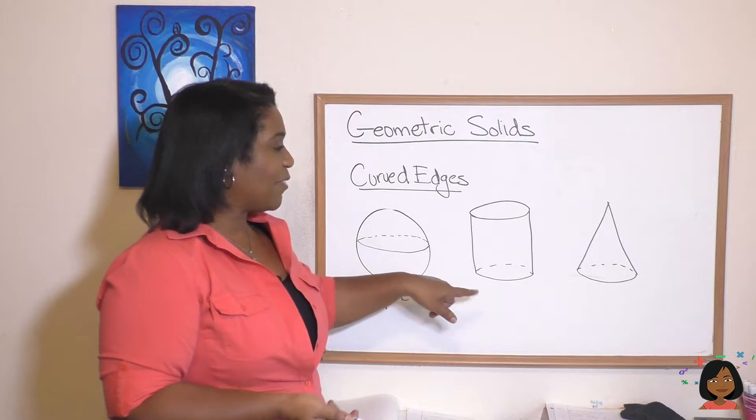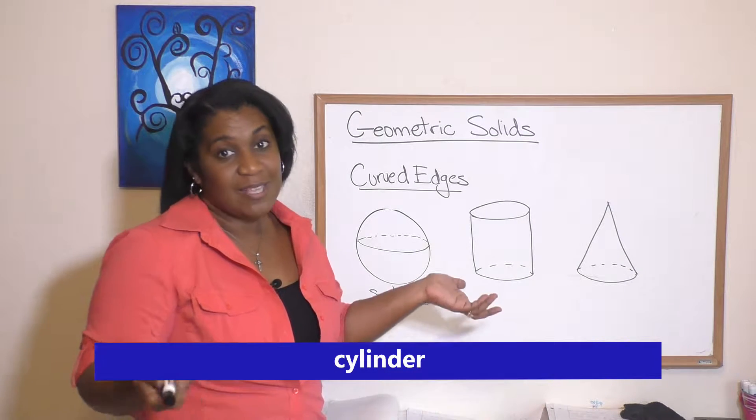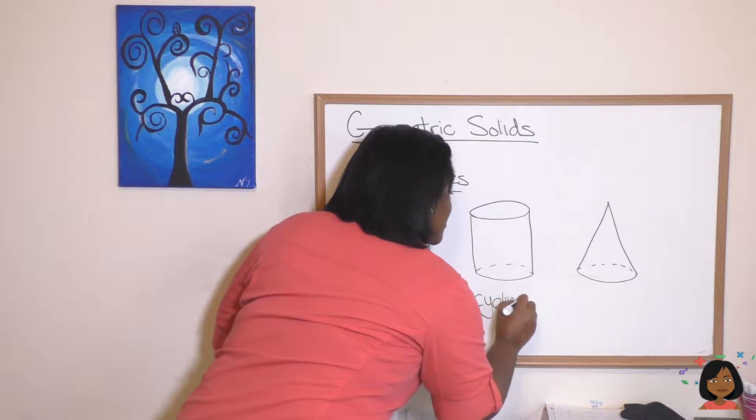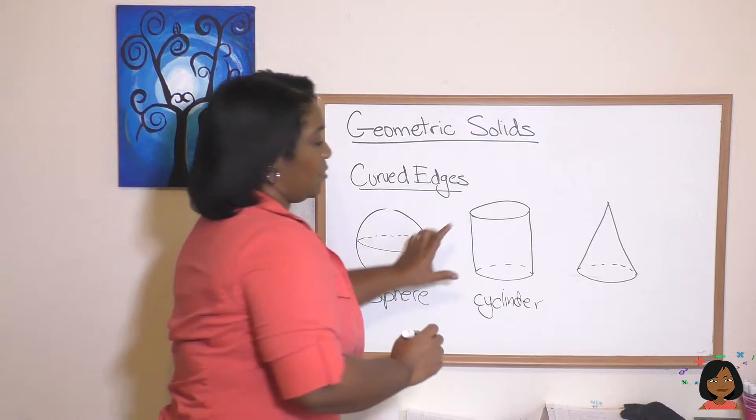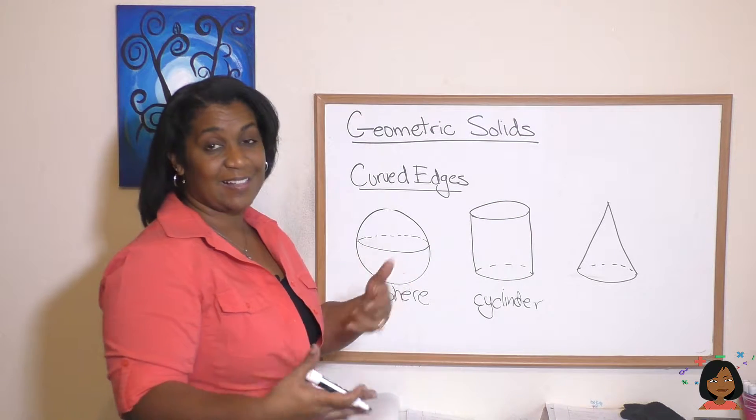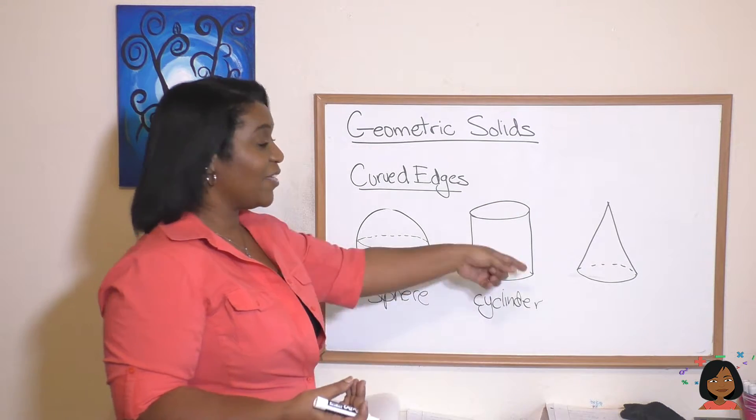What about this one? We call that a cylinder. A cylinder has two circles on the top and bottom, and really what's wrapped around it is a rectangle is how it's joined.